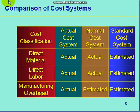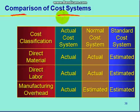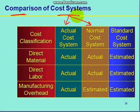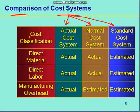Hello friends, let us begin with the comparison of different cost systems. Basically there are three types of cost system: first is actual cost system, second is the normal cost system, and third is the standard cost system. We are going to compare these three cost systems on three factors.